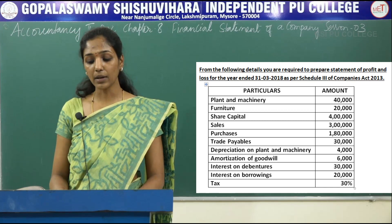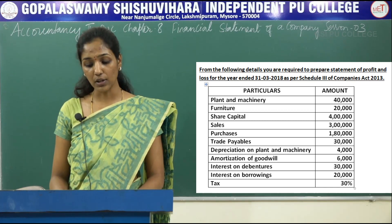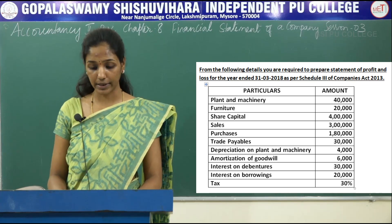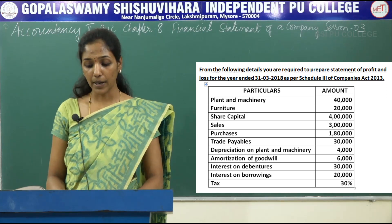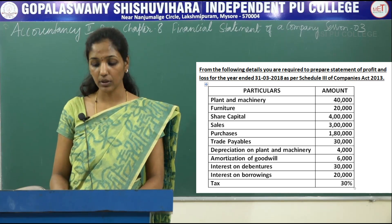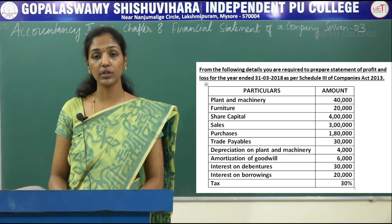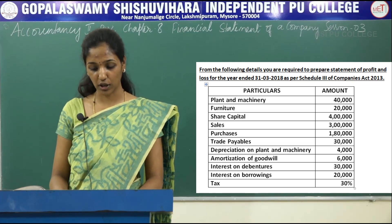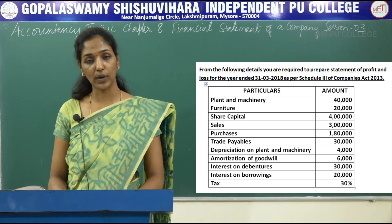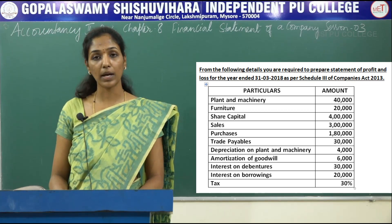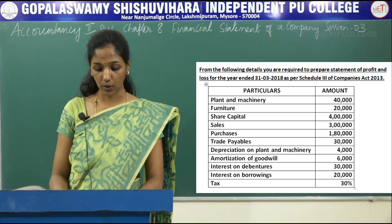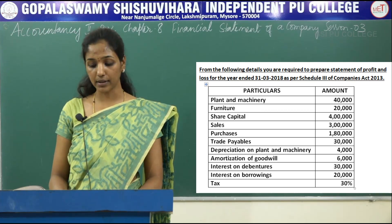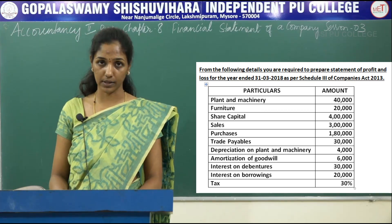Plant and machinery 40,000, furniture 20,000, share capital 4 lakh, sales 3 lakh, purchases 1 lakh 80,000, trade payables 30,000, depreciation on plant and machinery 4,000, amortization of goodwill 6,000, interest on debentures 30,000, interest on borrowings 20,000 and tax 30%.